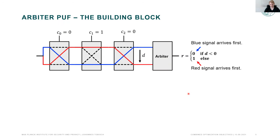To understand the attack and the design, we need some preliminaries. First, you need to know the arbiter PUF, which is the building block of most strong PUFs. It consists of a number of stages, and each stage has a challenge bit applied that determines whether the signal path runs through the stage crossed or straight. To query the PUF, you apply a signal at the beginning and have two signals racing through the stages. At the end, the arbiter determines which of the two signals arrives first, producing a single response bit.